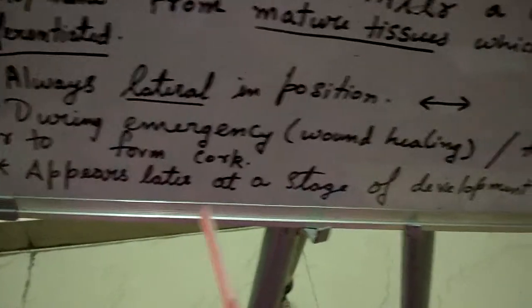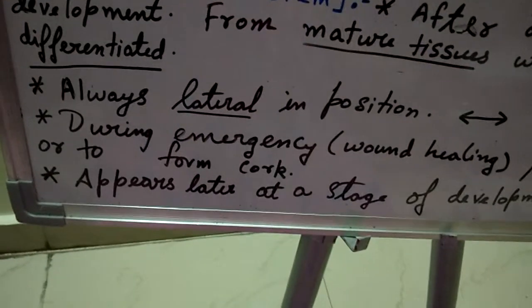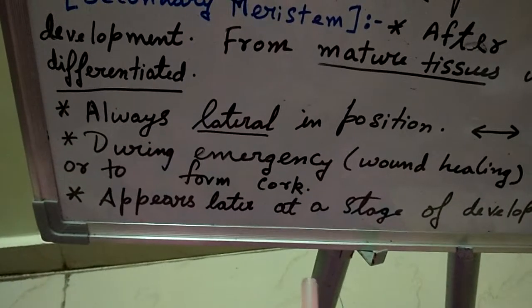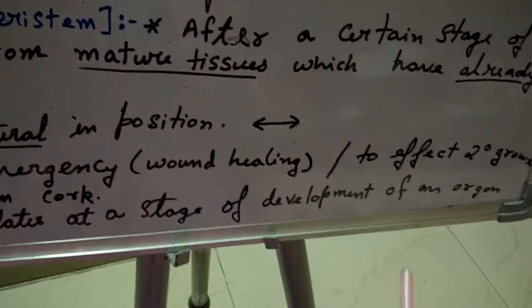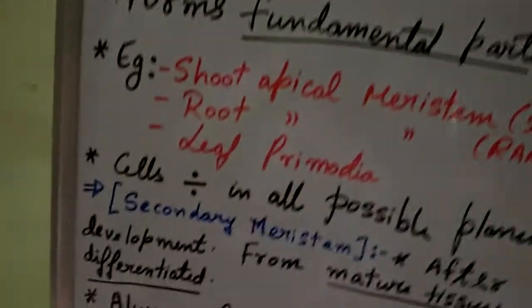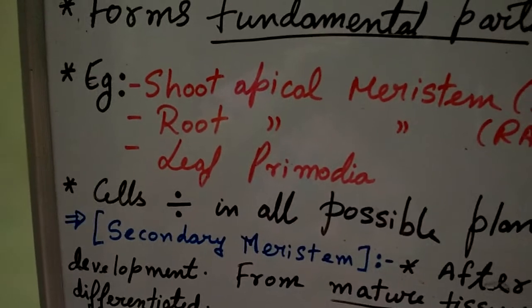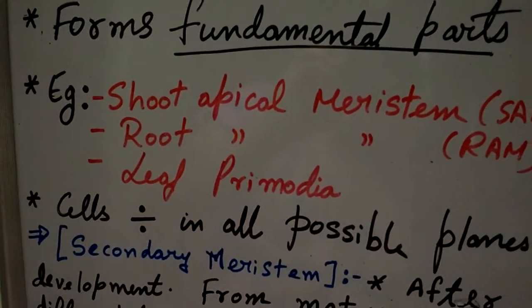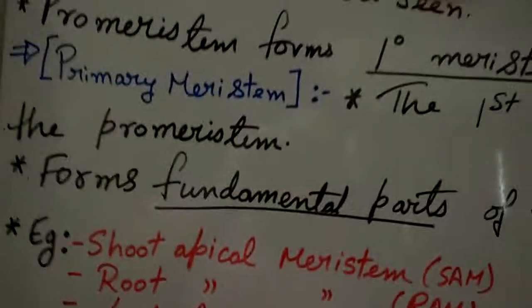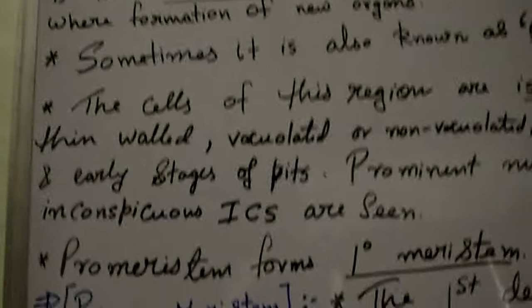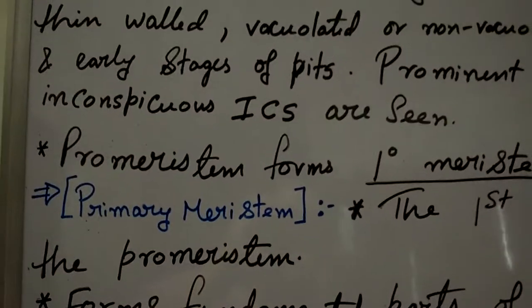Secondary meristem appears later at a stage of development of an organ — after the formation of the initial fundamental organs. In the next video, we will cover the classification of meristem based on plane of division.